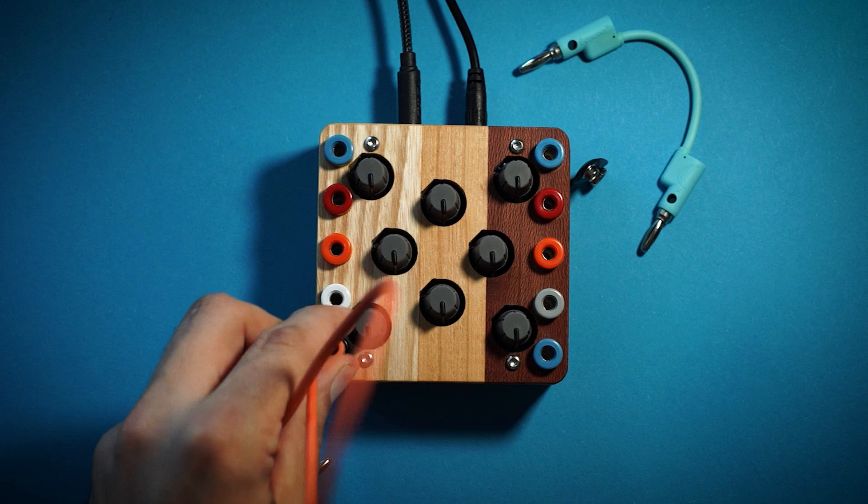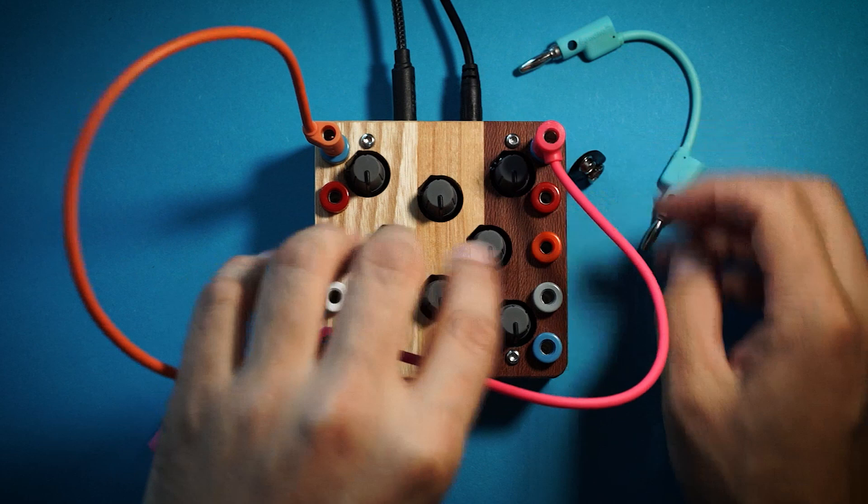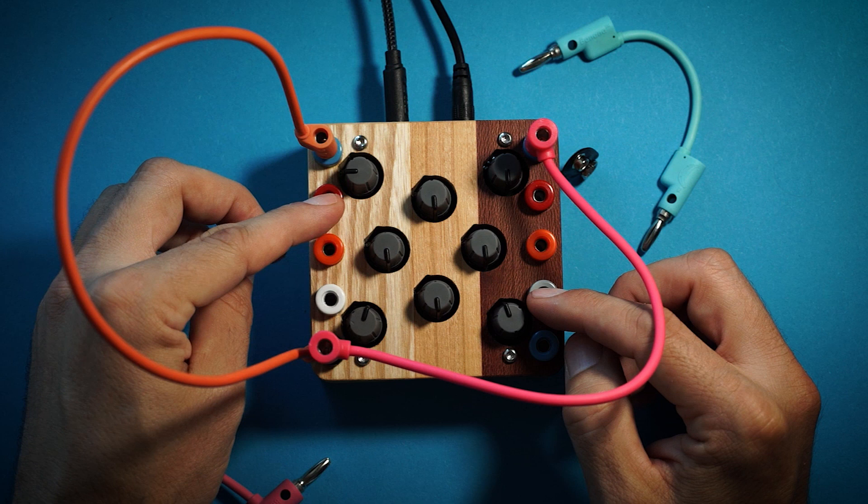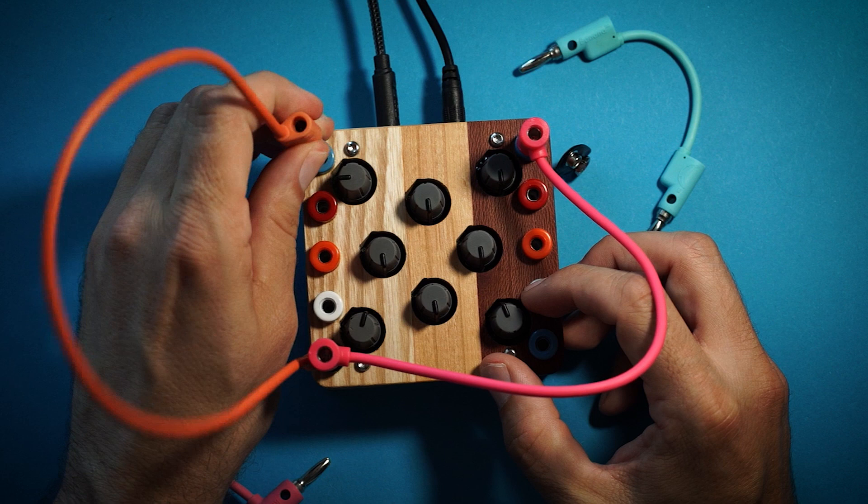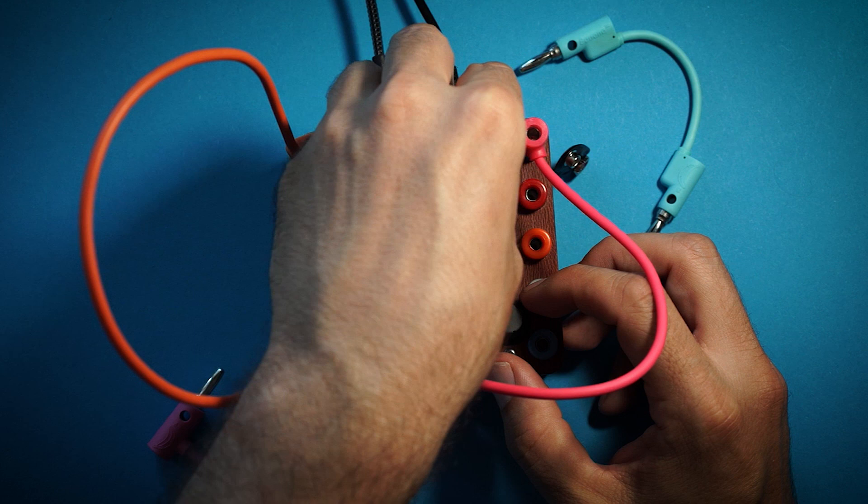So one of my favorite things to do is basically taking the ground and putting them into the oscillator CVs. Now if I open it up and move this, you can hear the speed of this oscillator right. However, this is the true speed. Putting ground in it basically slows things down.